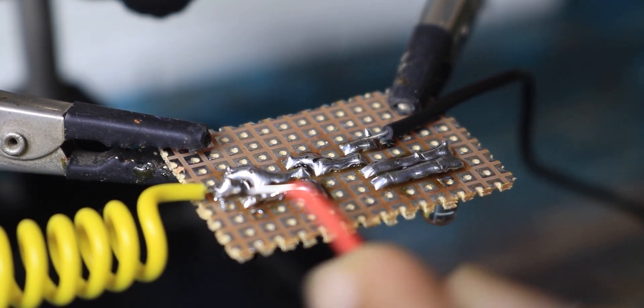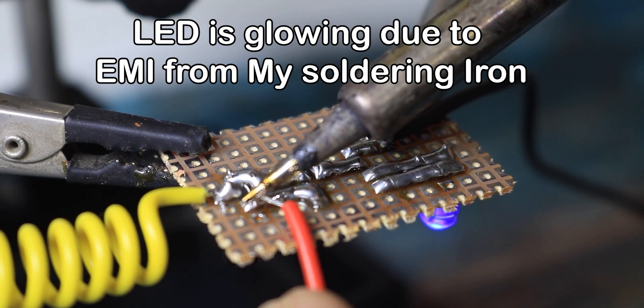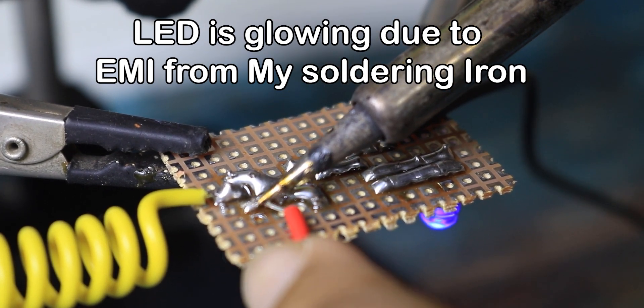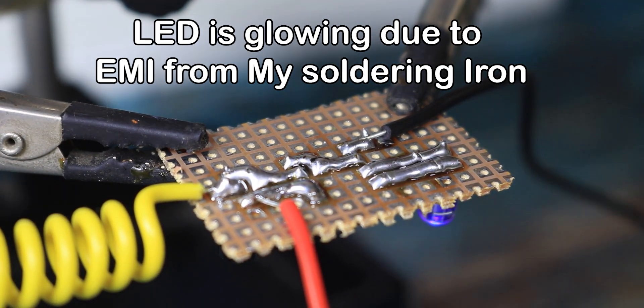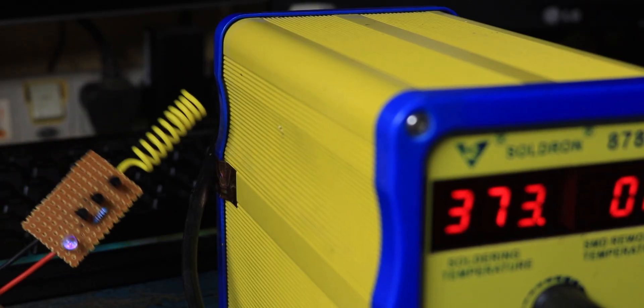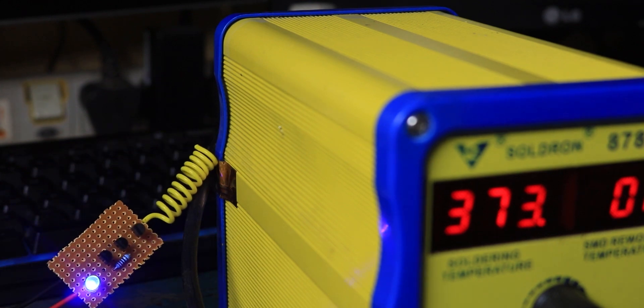Now all we have to do is give some power to this circuit. You can give anywhere from 3 to 5 volt DC. I am using a simple 3.7 volt lithium iron cell. Once that is done, now if we move this antenna over any live wire, the LED will glow.